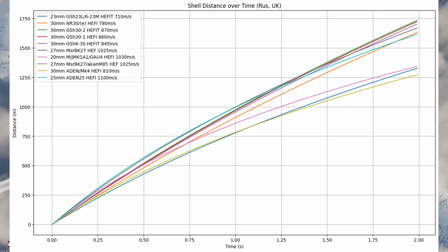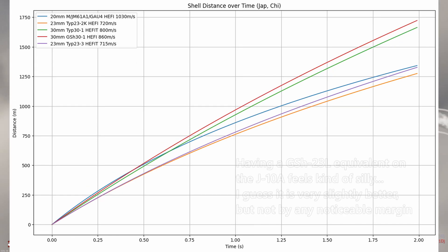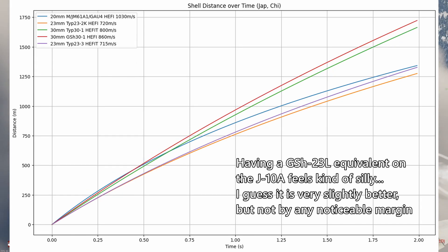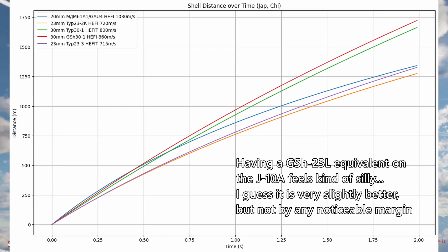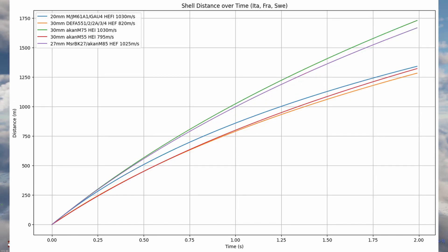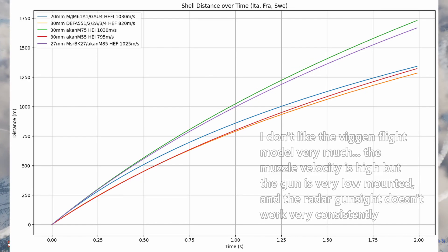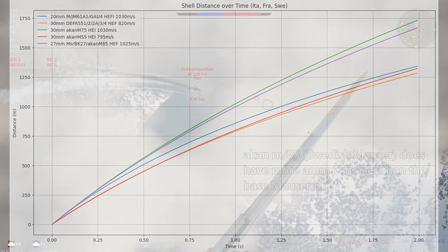The British are still stuck with the Adens for the most part, though the Aden 25 is actually really good — I guess it has to be since they only get stealth belts. China gets slightly improved Russian clones, though their Type 23 is marginally better than the Russian GSh-23 with a muzzle velocity 5 m/s higher. The French are still stuck with the DEFAs. The Swedes get an upgrade in the form of the Kahn M75 on the Viggens, though they're stealth-only and can be pretty wonky to aim. The Mauser on the Gripen is a bit worse in ballistics but still very good.